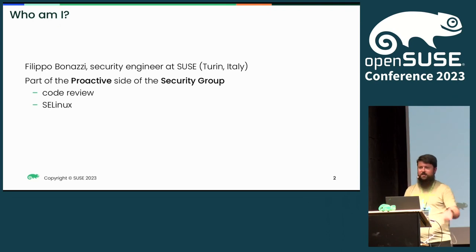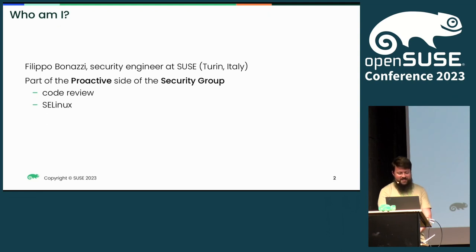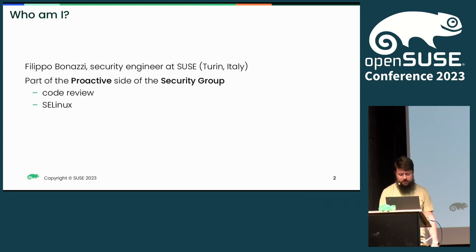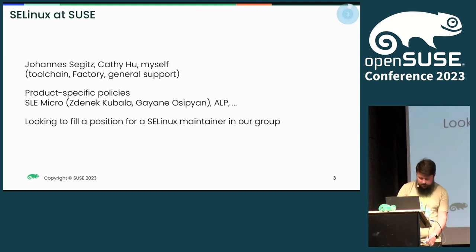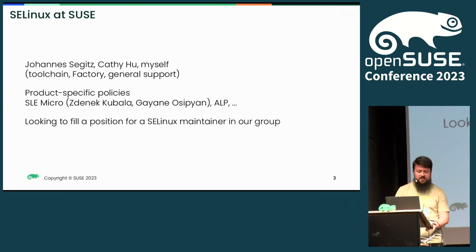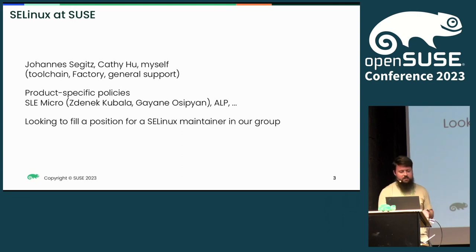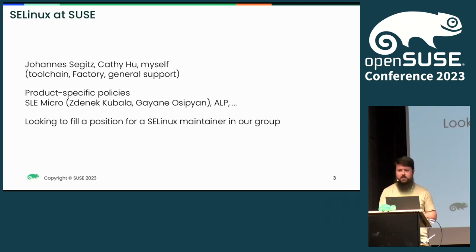We have plenty of people from the security group here. We do many things in the security group. I mostly do code reviews, audits, and mostly SELinux work. At SUSE, we have a few more people that do SELinux stuff — historically Johannes, and nowadays also Cathy and myself. We maintain the SELinux toolchain and a policy in factory.